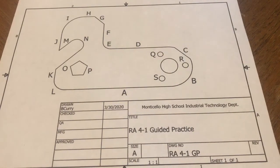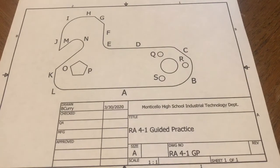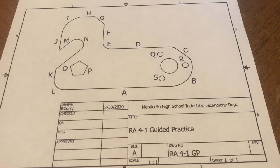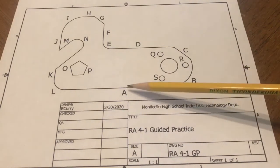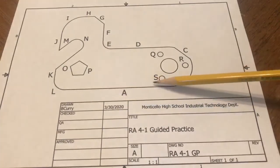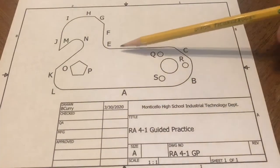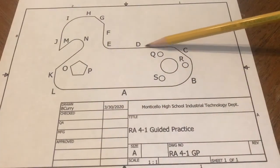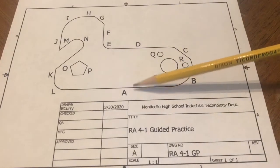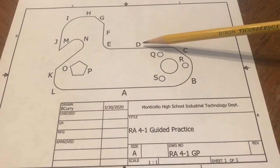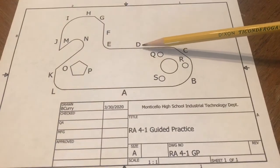For number one, the question reads: consider the four geometric relationships — parallel, perpendicular, concentric, and tangent. What is the relationship that exists between line A and line D? Well, that's pretty obvious. Both of those lines are parallel, so the answer there would be parallel.